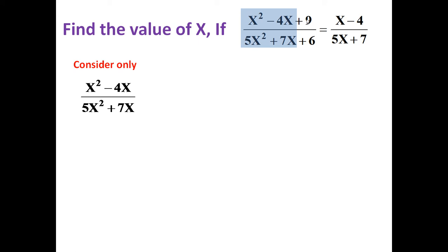So, just as in last case, forget about the constant term or independent term. Only term with variable we have to write. So, x square minus 4x divided by 5x square plus 7x. Let us simplify it by taking x common. It becomes x minus 4 and 5x plus 7.